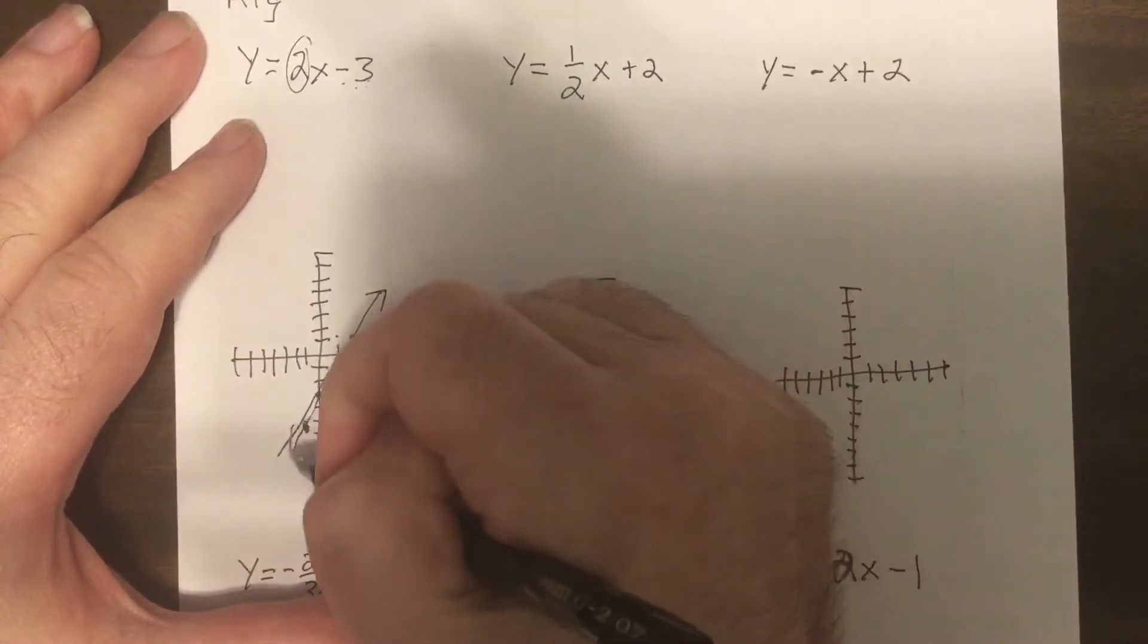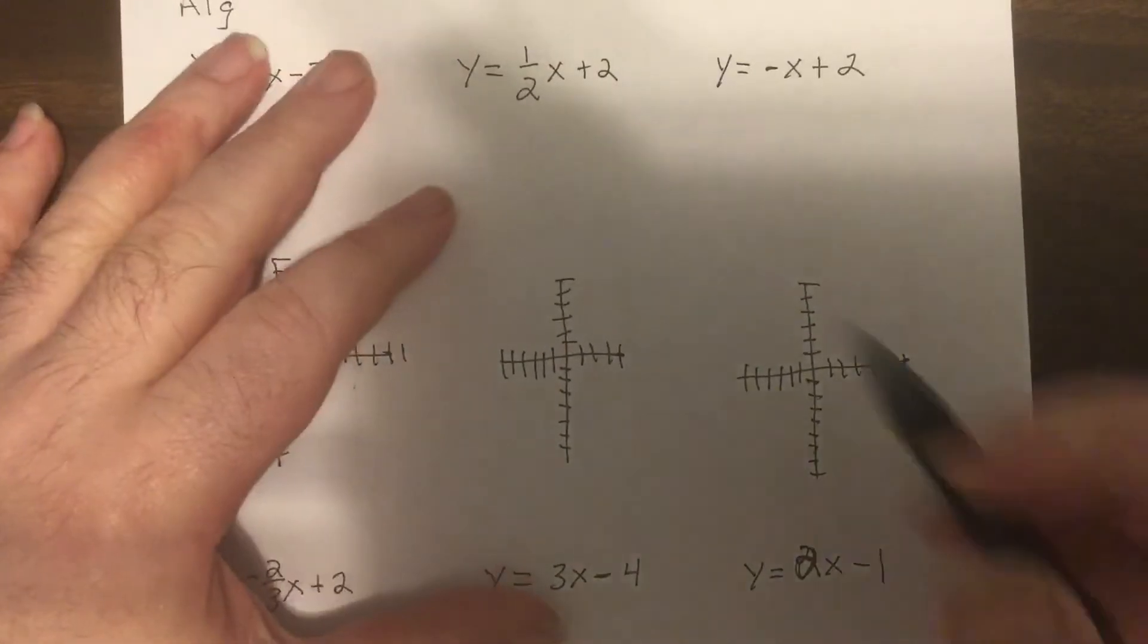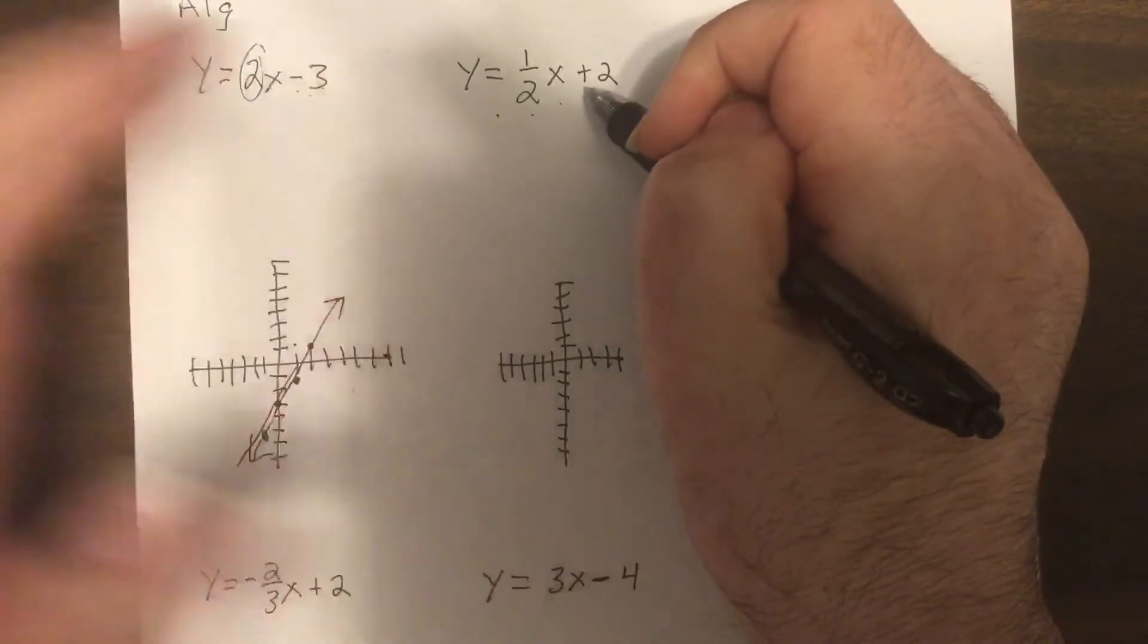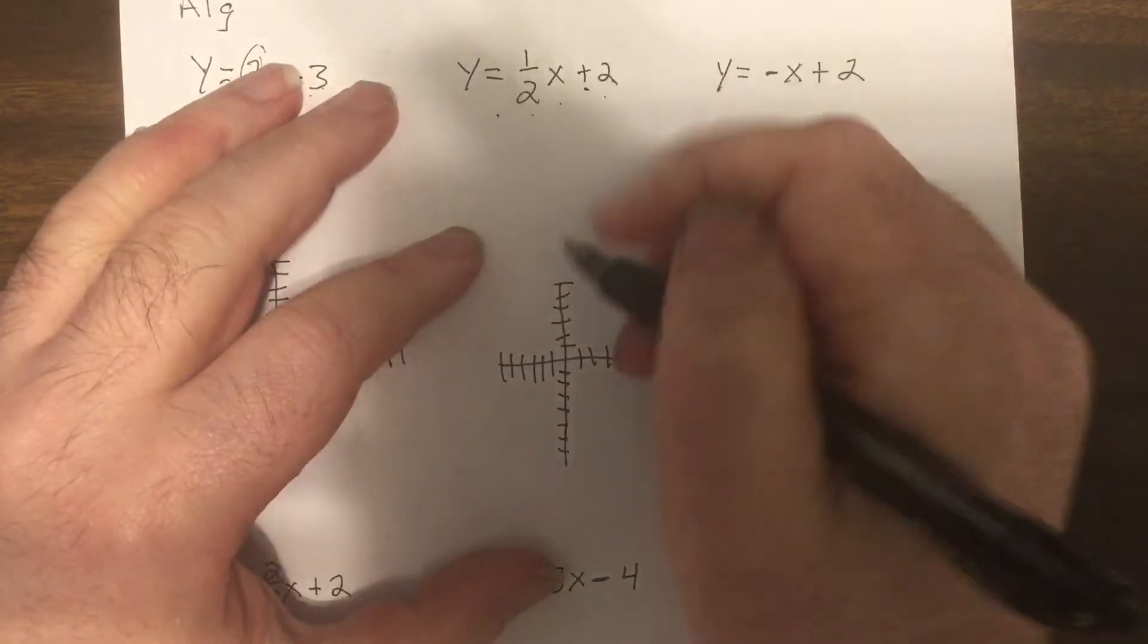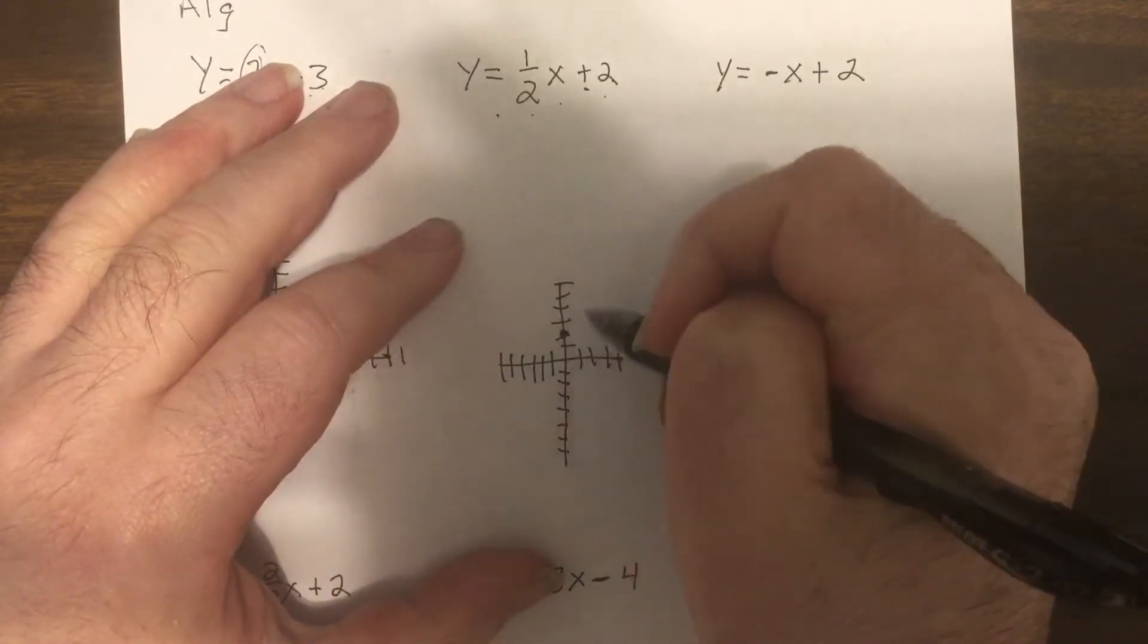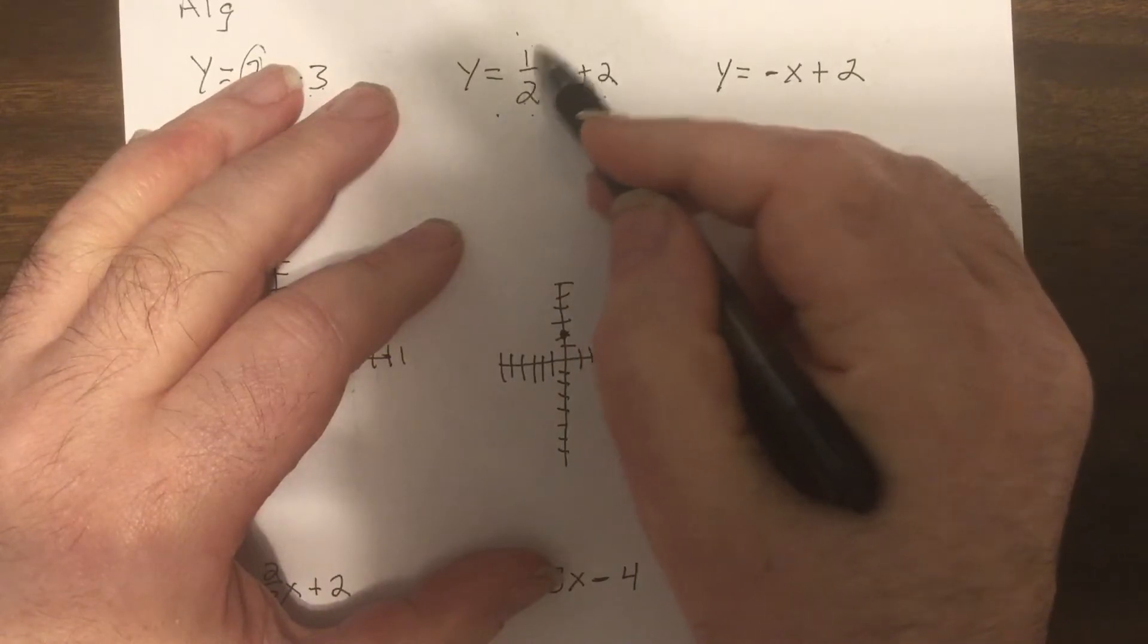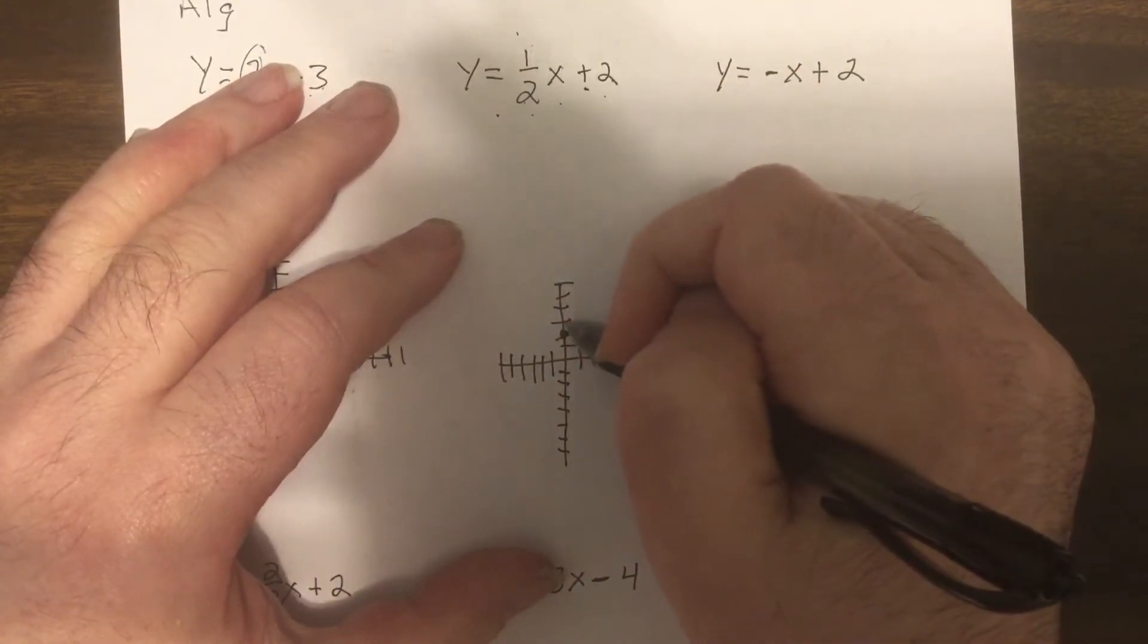Next one was y = 1/2x + 2. Again, two is the y-intercept, I put a dot at two. The slope is one over two. Remember the top number's always how far up or down, it's positive, up one right two, up one right two.